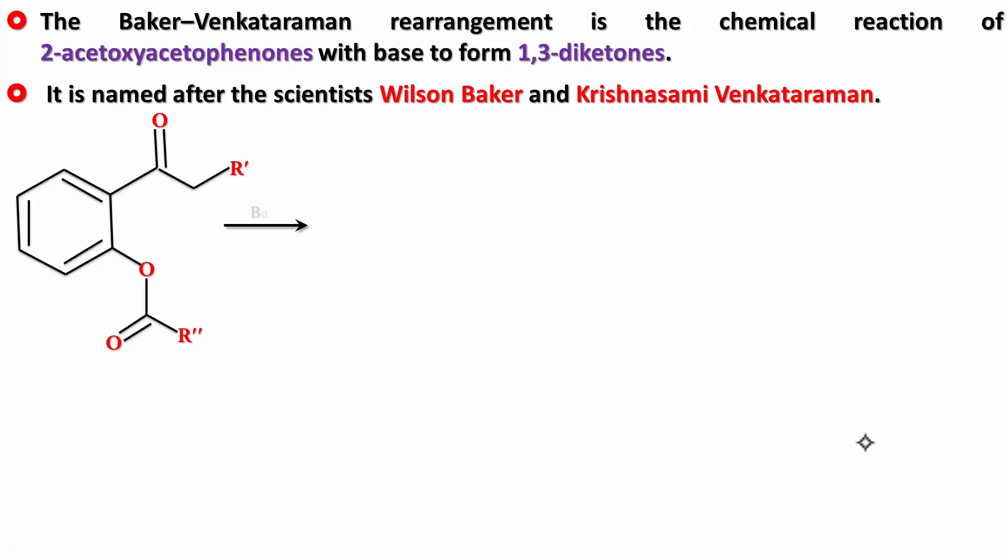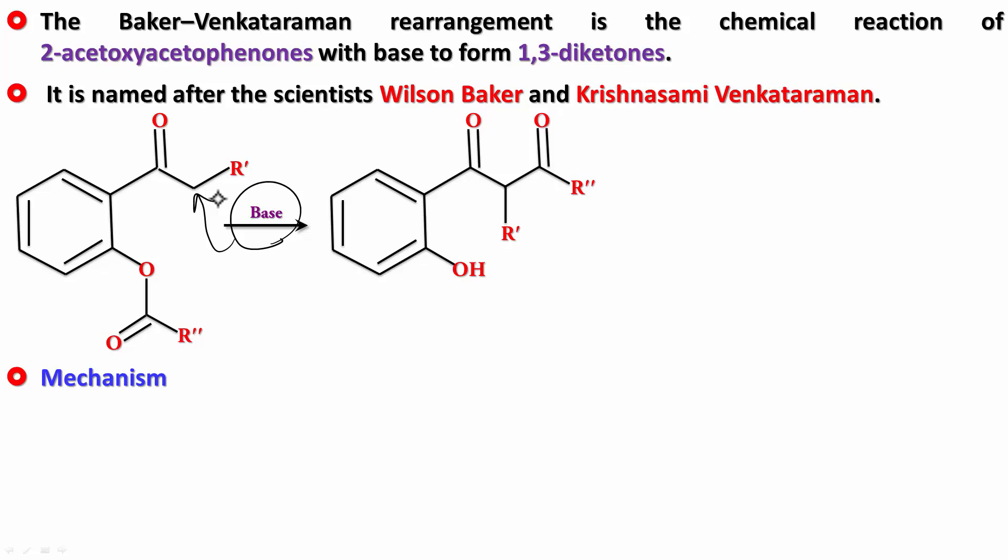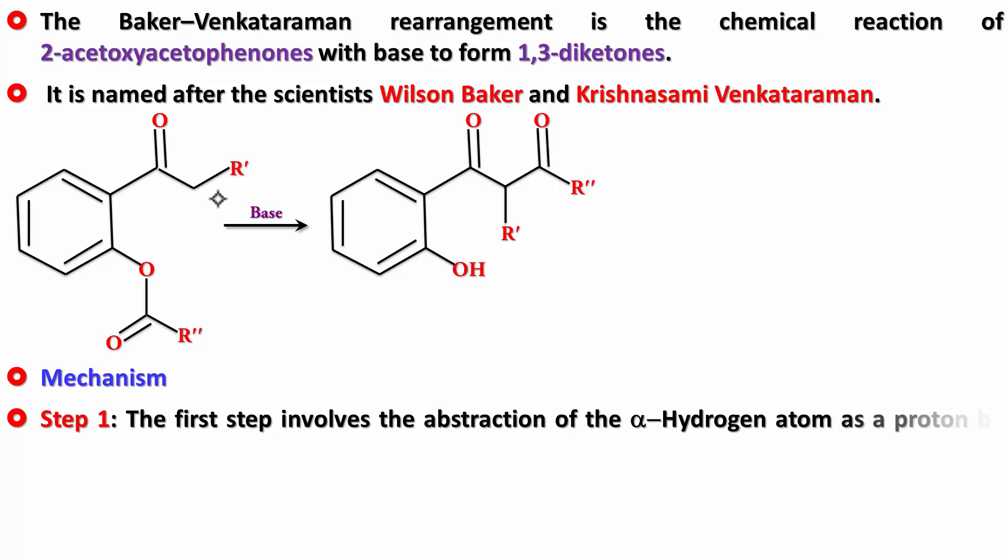The overall reaction shows 2-acetoxy-acetophenone with a base converting to a 1,3-diketone. Let's understand the mechanism. In the first step, the base attacks and abstracts the alpha hydrogen, forming an enolate anion. Step 1 involves abstraction of the alpha hydrogen atom as a proton by the base, forming an enolate ion.